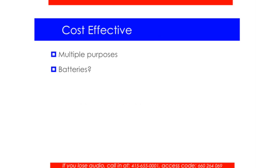That leads into cost effectiveness. Multiple purposes: you don't want to purchase a technology that you're going to use one time. There are quite a few different technologies — whether apps or active gaming equipment — that can be used for one purpose only. If you're spending money and trying to figure out how to allocate your funds, make sure you're able to incorporate that technology in multiple ways in your curriculum.